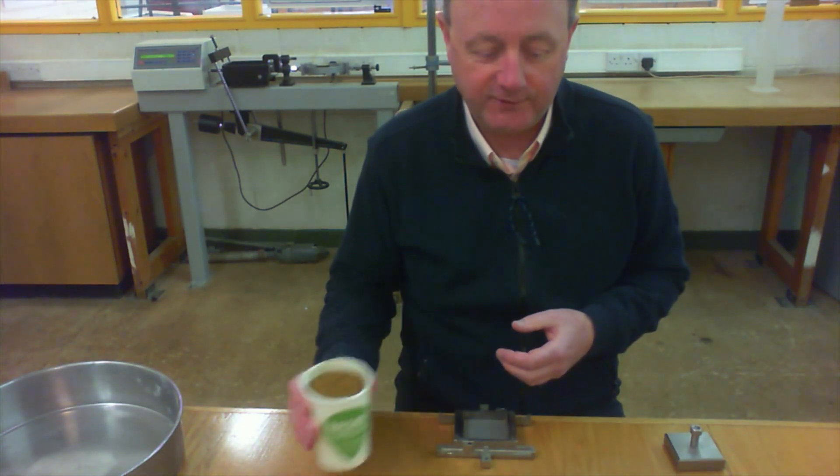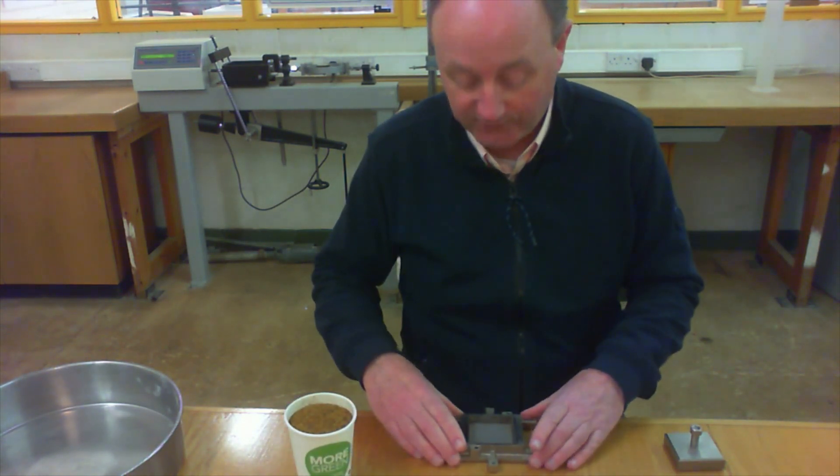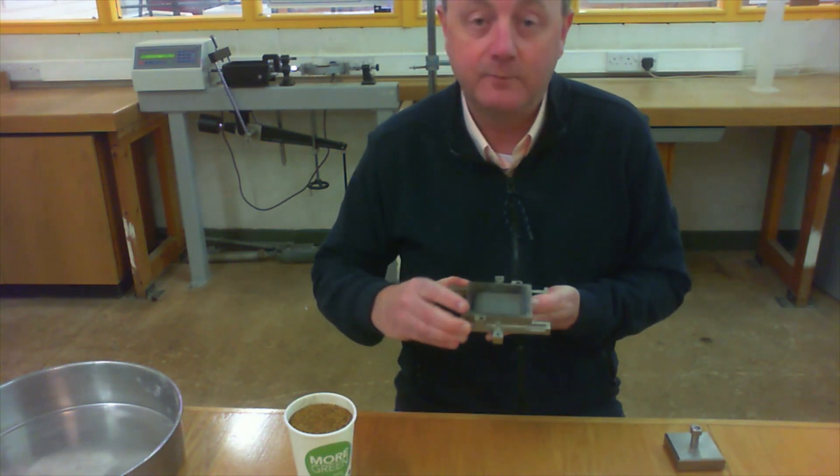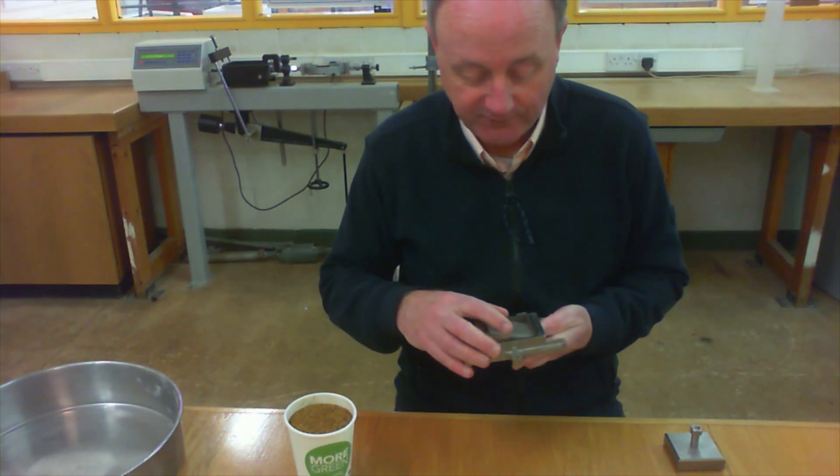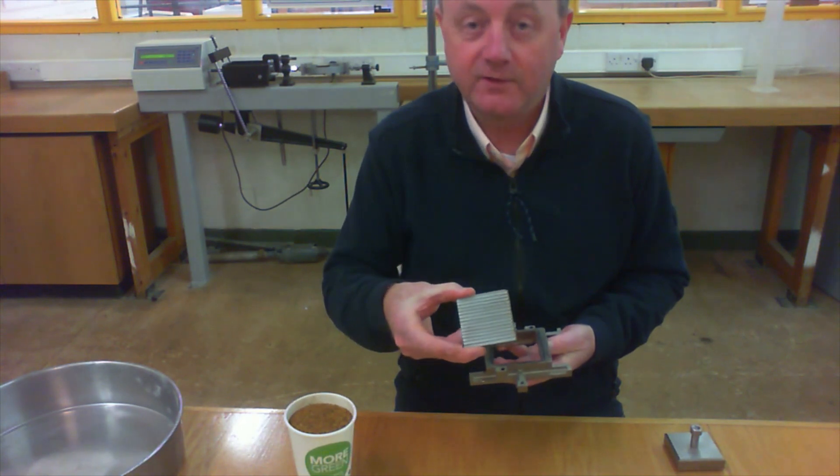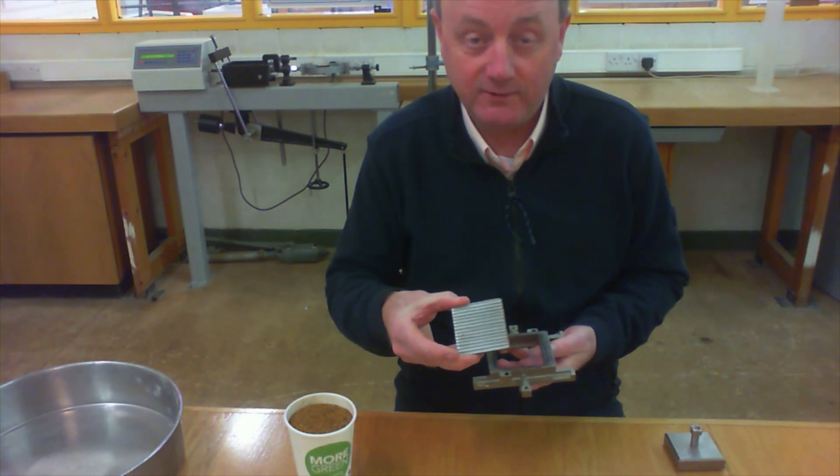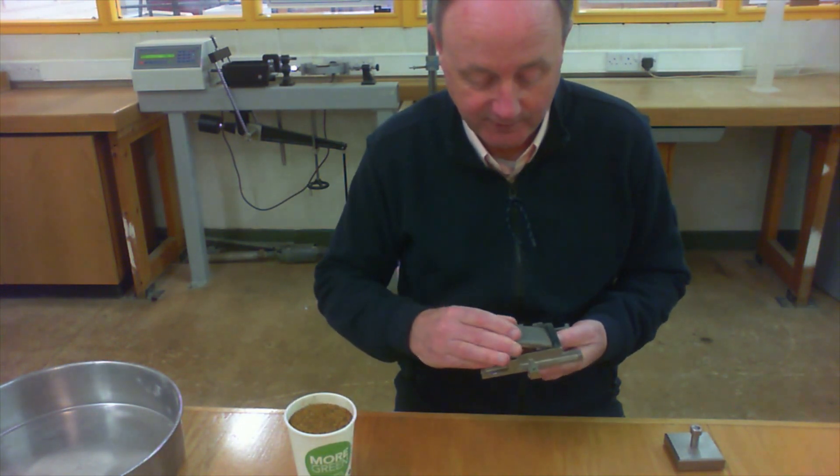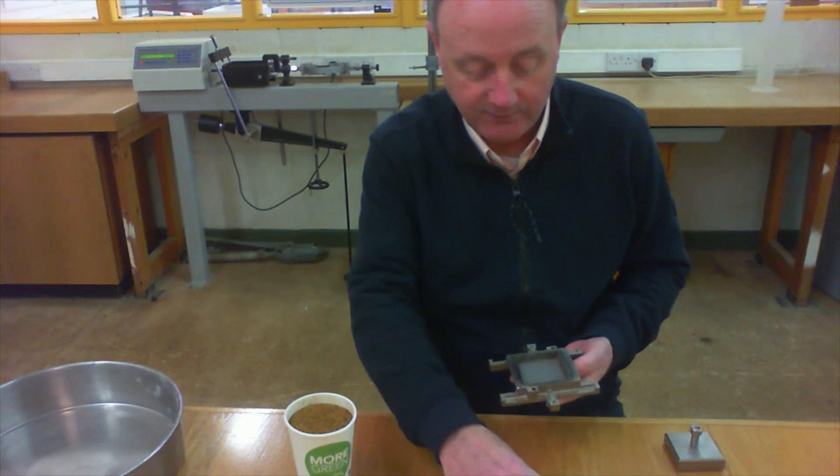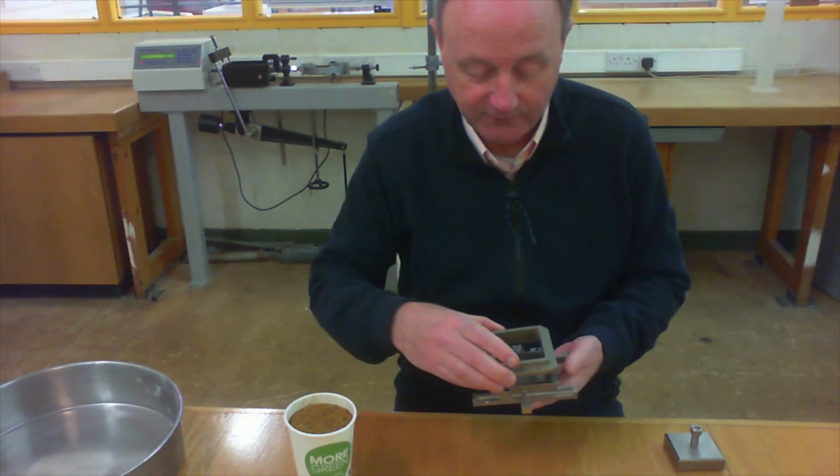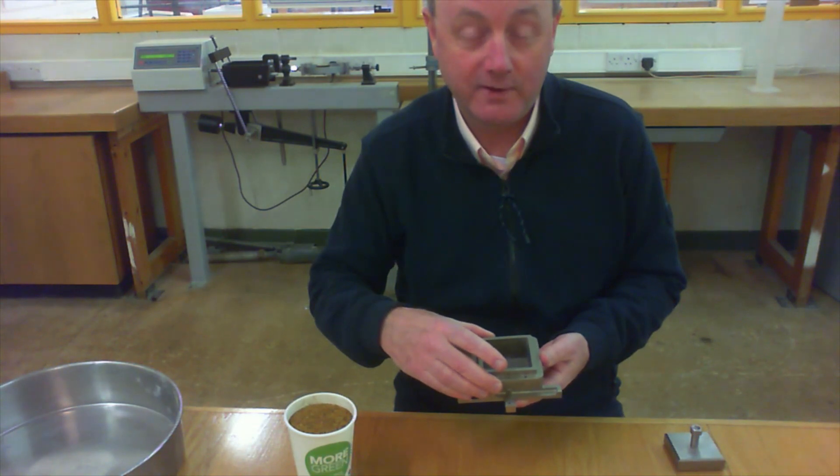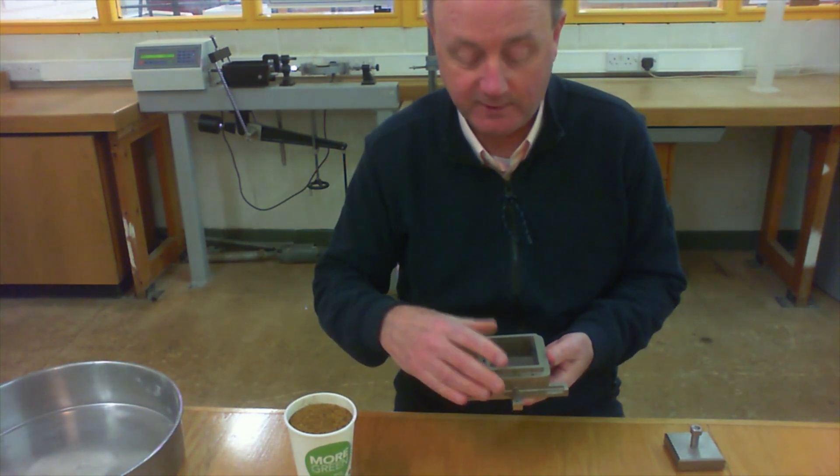So what is the shear box test? Well the shear box is a small box, this is the bottom half of the box, inside there is a plate that helps to grip the sample and stop it from shifting inside the box and these two halves of the box are located over each other and we'll prepare the sample in a moment inside the box.